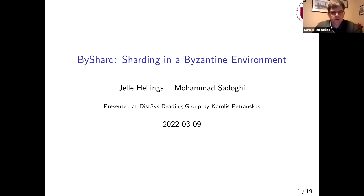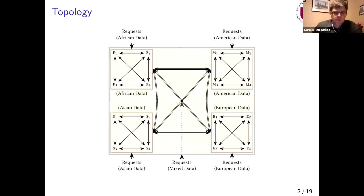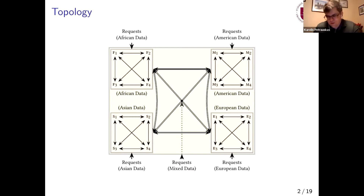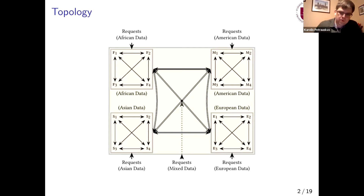I'm Karolys Petrauskas and I'm presenting the paper on sharding in a Byzantine environment. The topology in question is presented here. We have a Byzantine setting, so nodes can crash, they can recover, they can lie. The setup is split into shards, and each shard should maintain its own state instead of the usual setting where you replicate data through all the nodes in the same way. So sharding is the main question here.